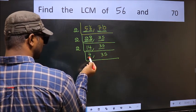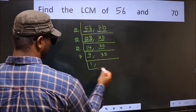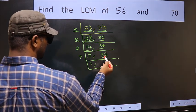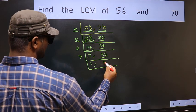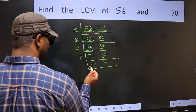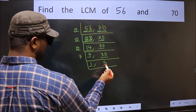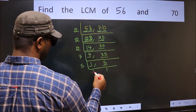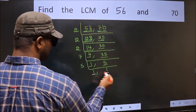Now we have 7 — 7 is a prime number, so 7 divided by 7 is 1. The other number 35 — when do we get 35 in the 7 table? 7 times 5 is 35. Now we got 1 here, so focus on the other number 5. 5 is a prime number, so 5 divided by 5 is 1. We got 1 in both places.